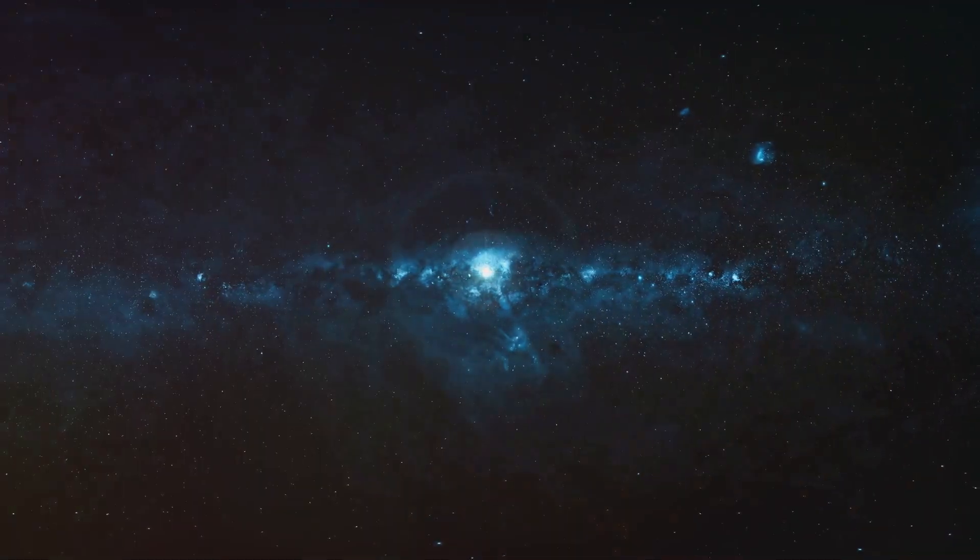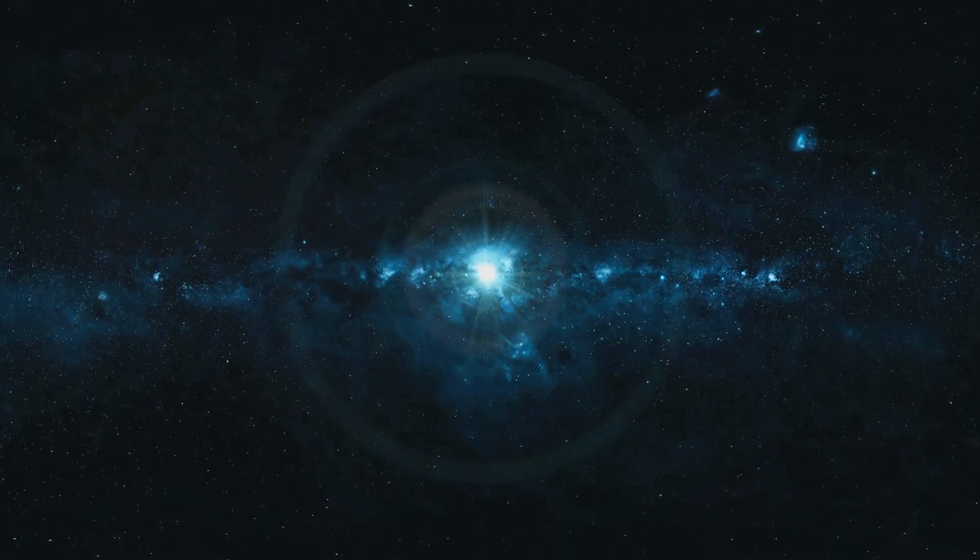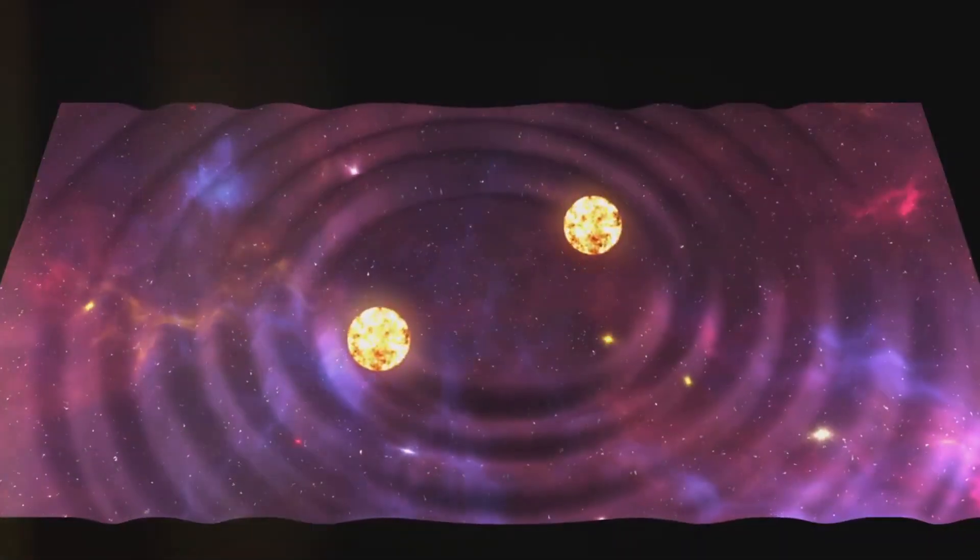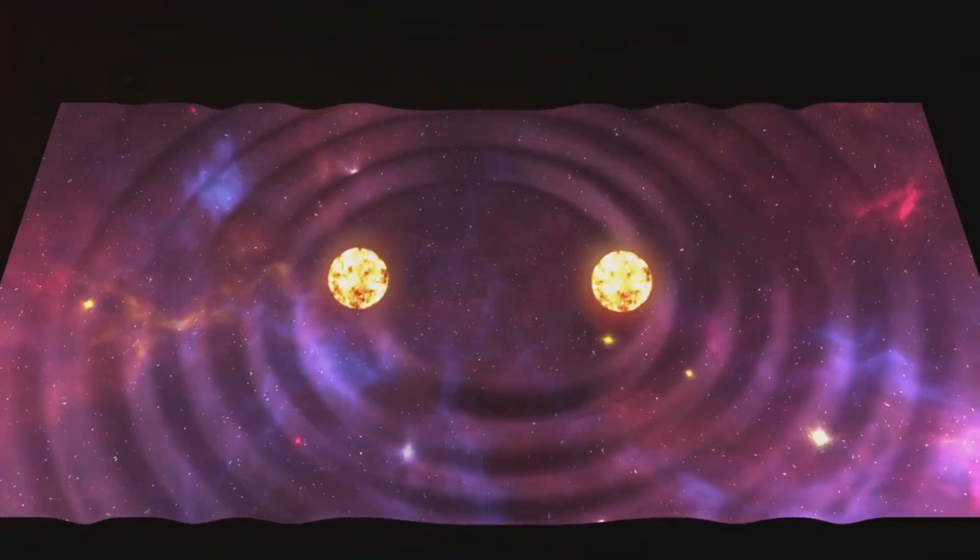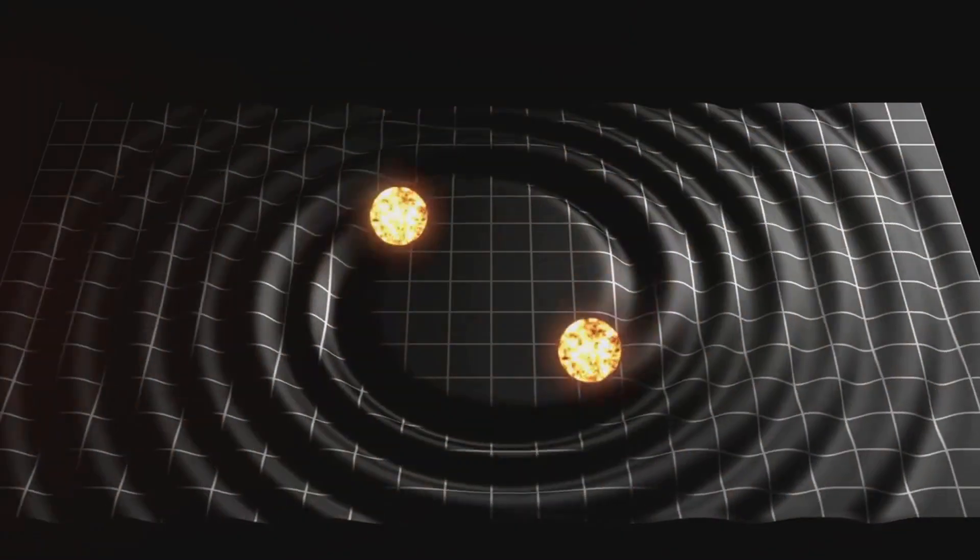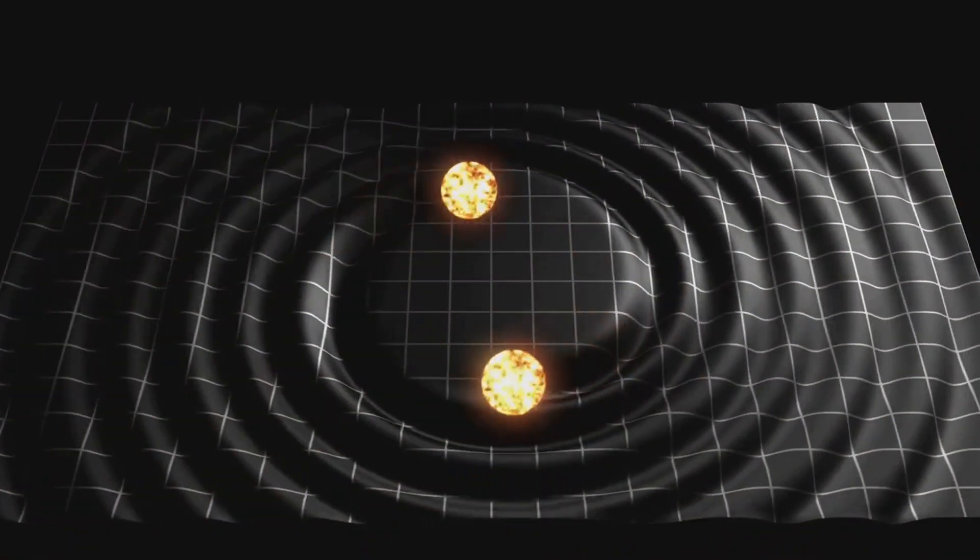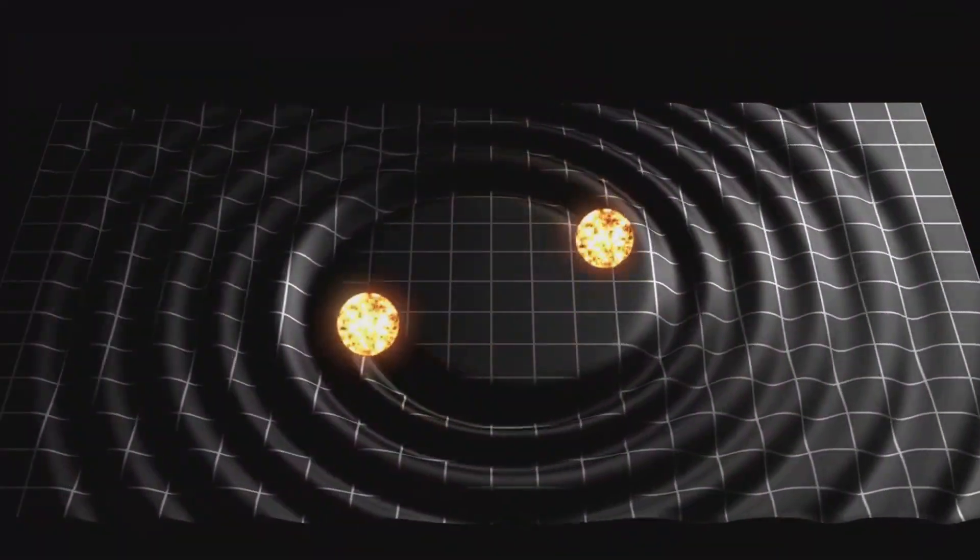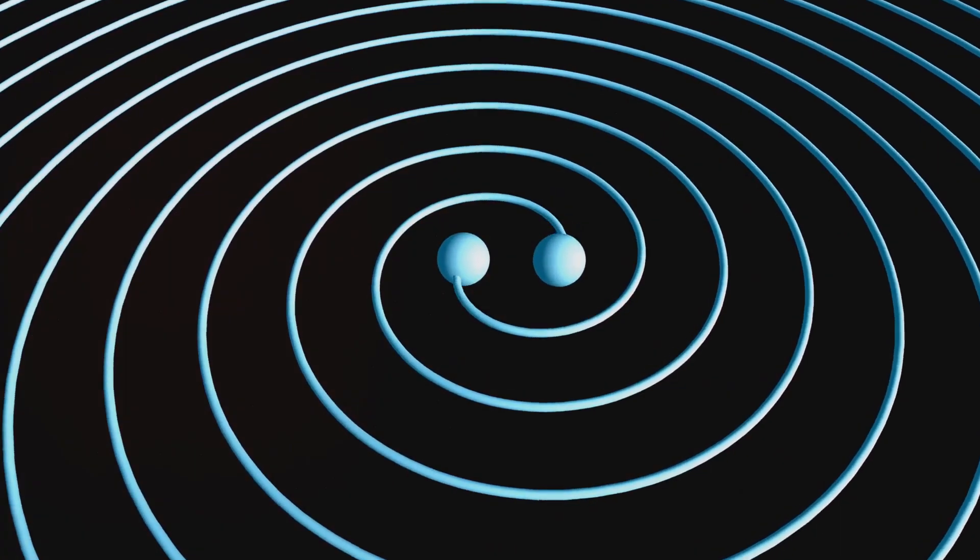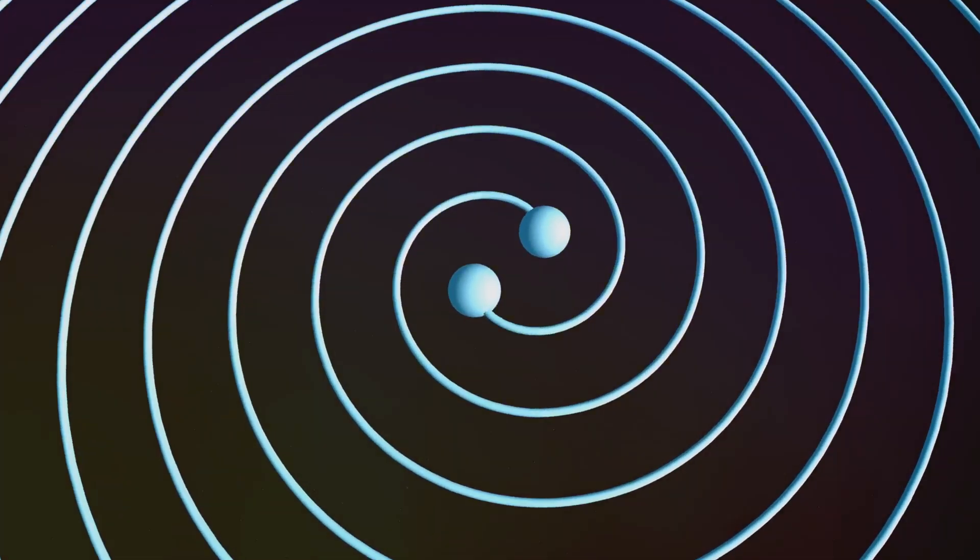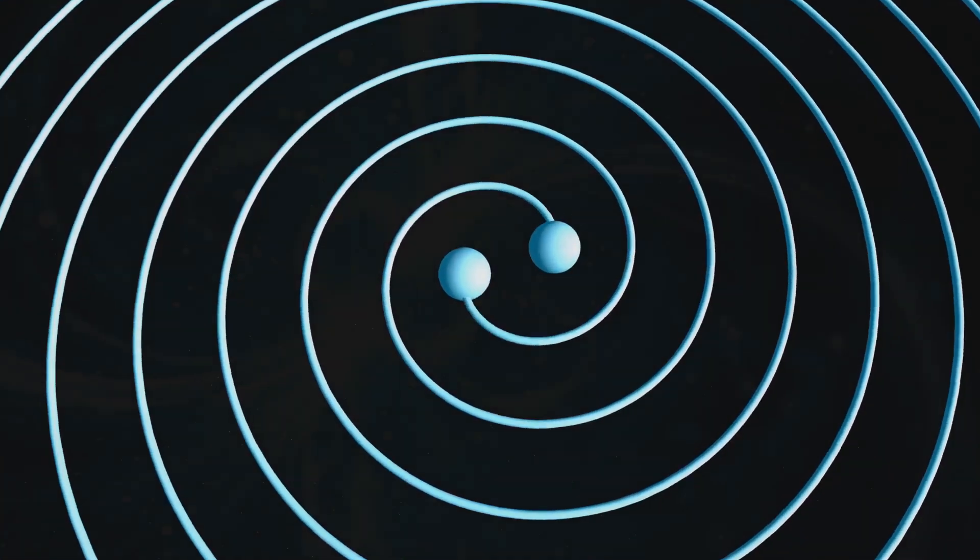These isotopes then decay into more stable elements, including gold, platinum, and other heavy metals. Neutron star mergers are extremely rare events, but they play a crucial role in enriching the universe with the heaviest elements. These events are so powerful that they create ripples in the fabric of space-time known as gravitational waves. The detection of gravitational waves from neutron star mergers has provided astronomers with a new window into these extreme cosmic events.